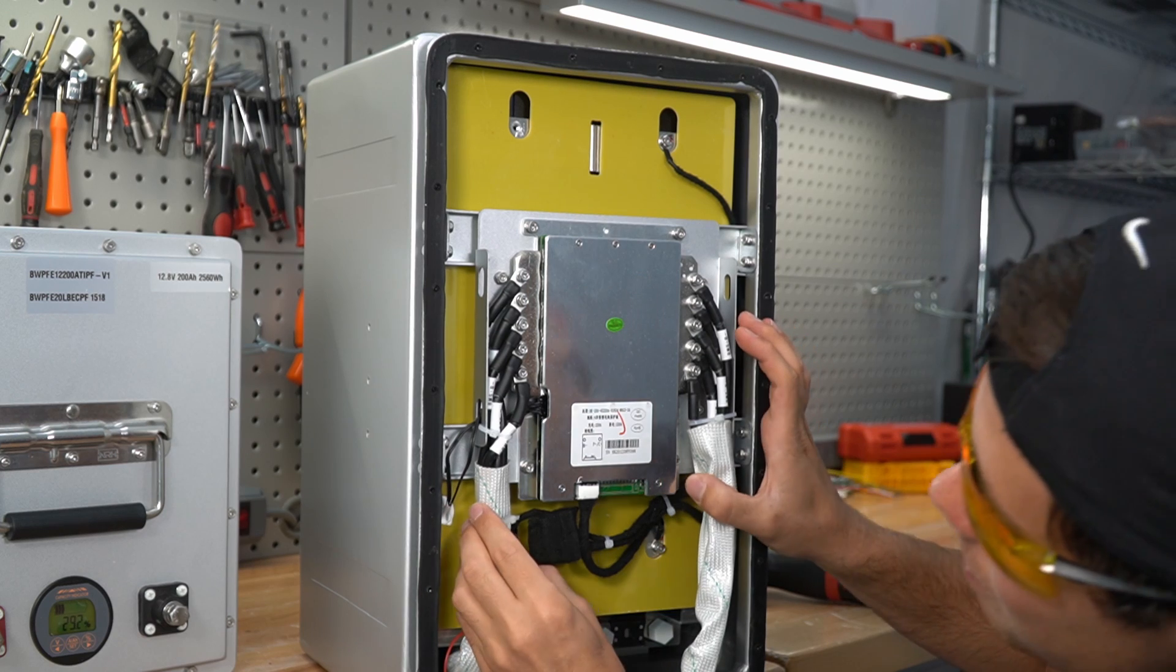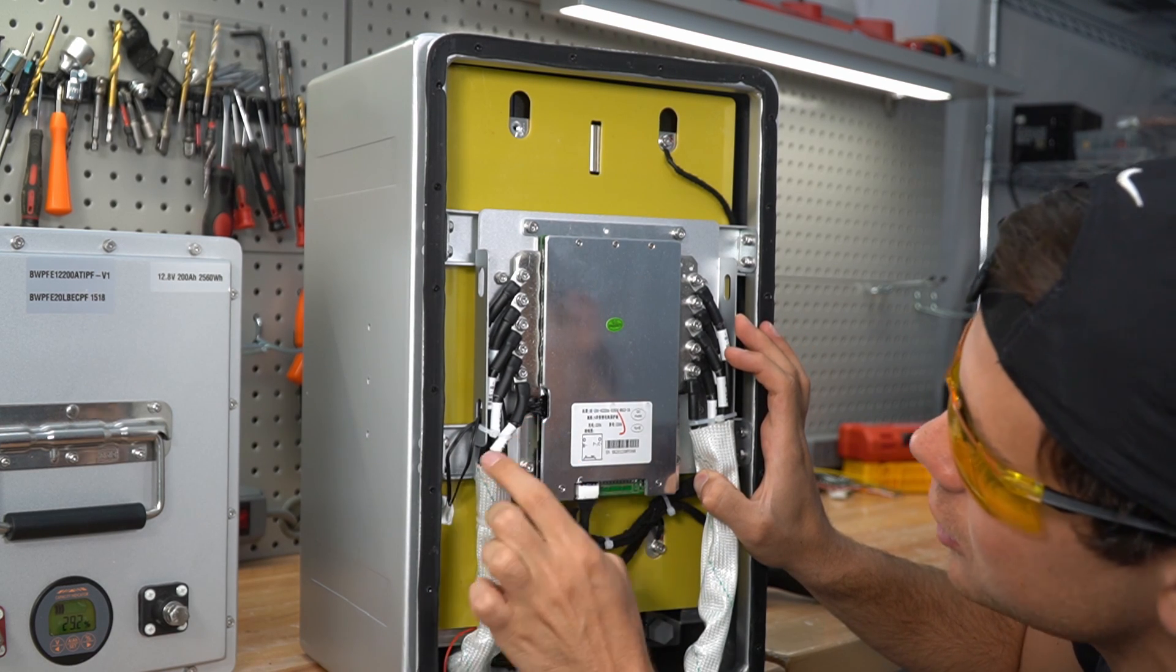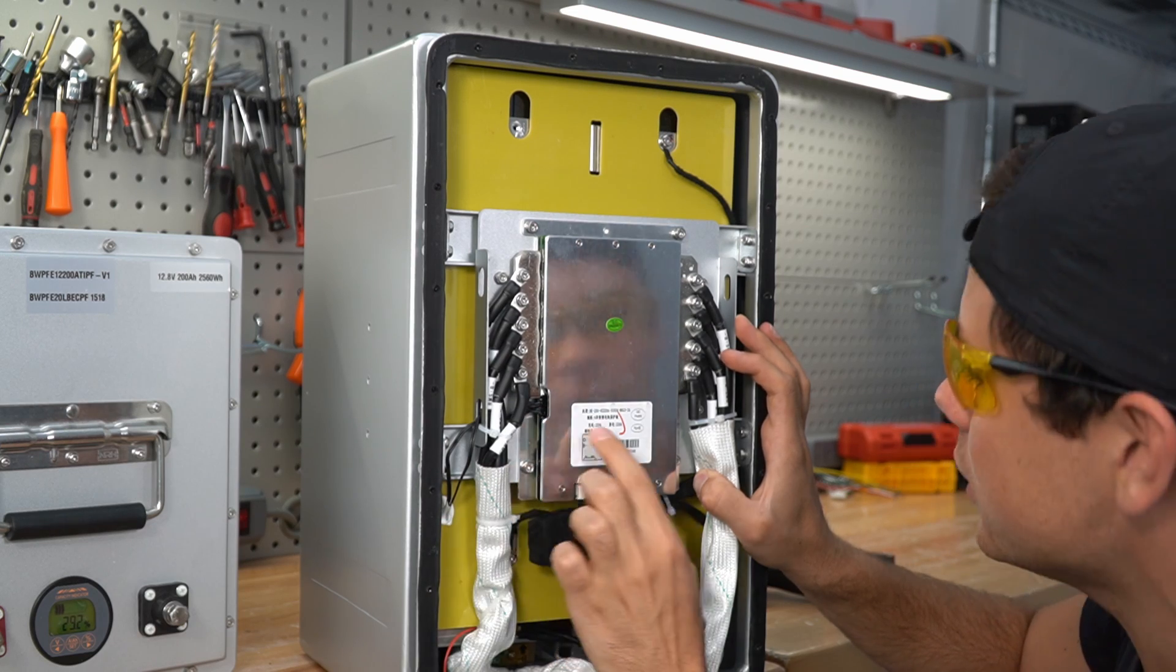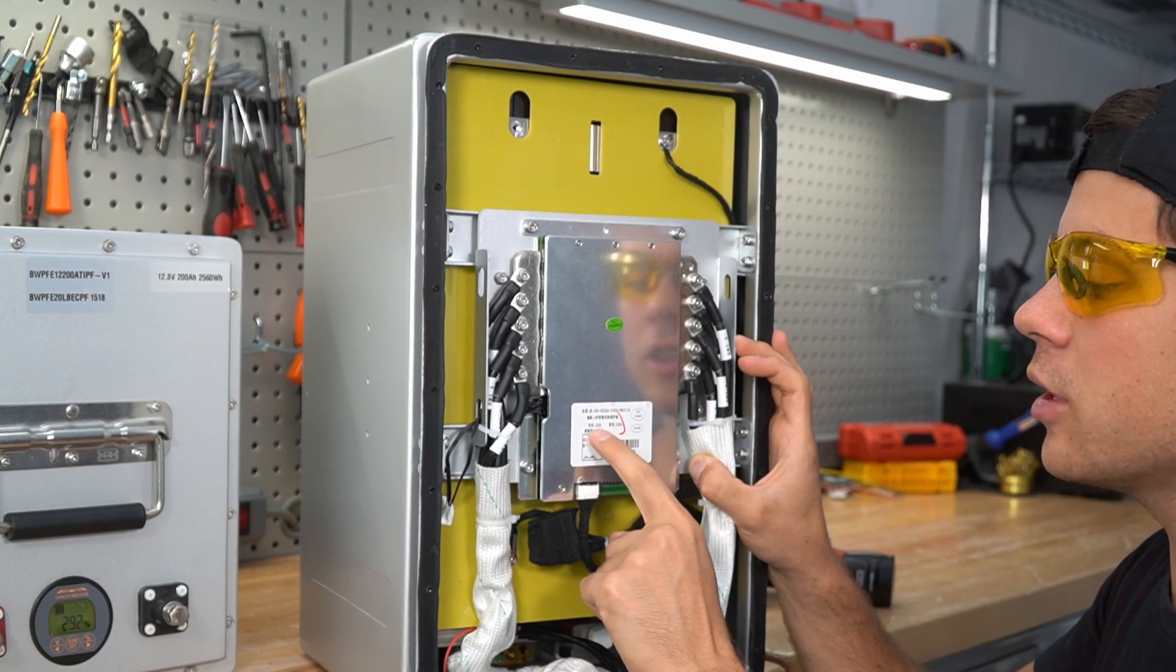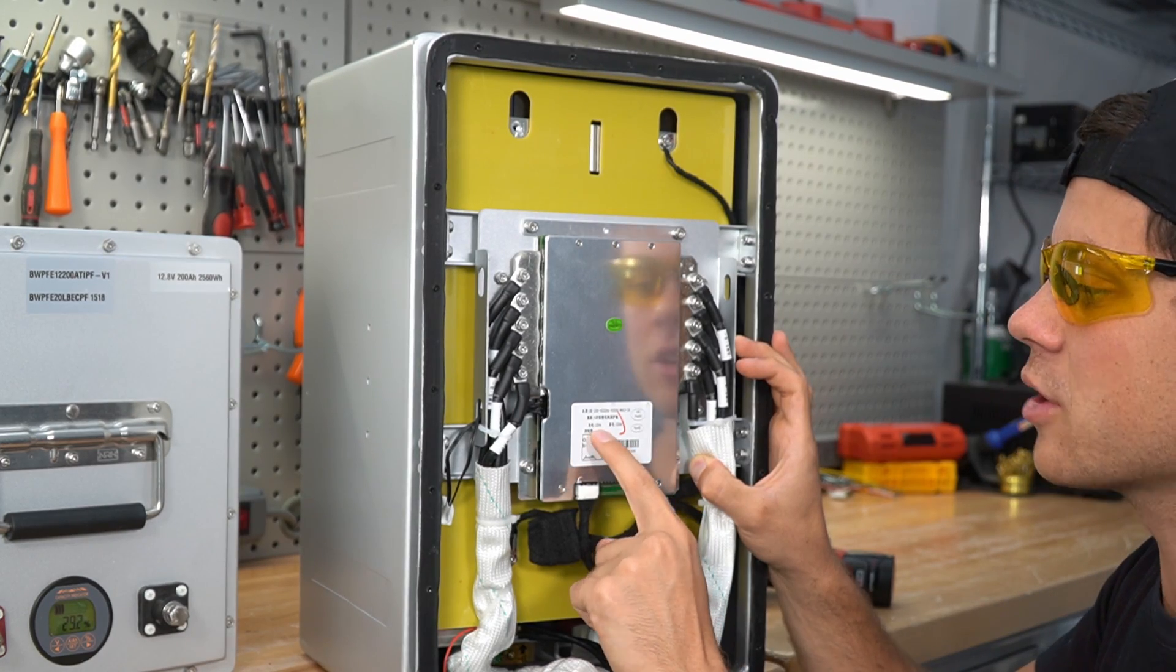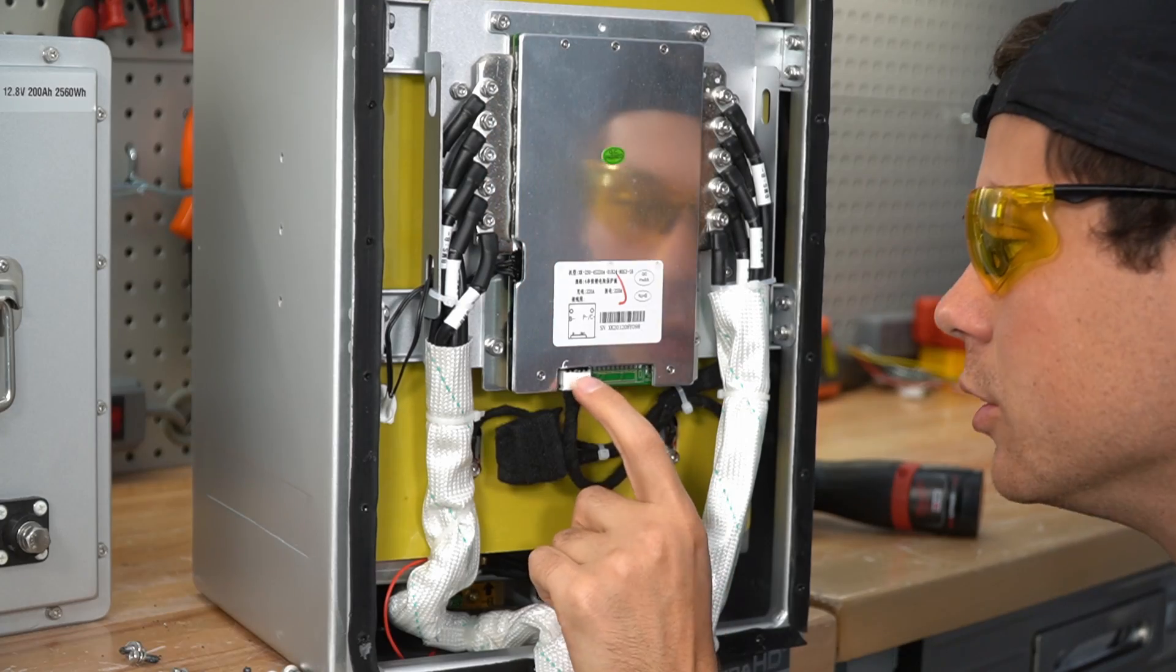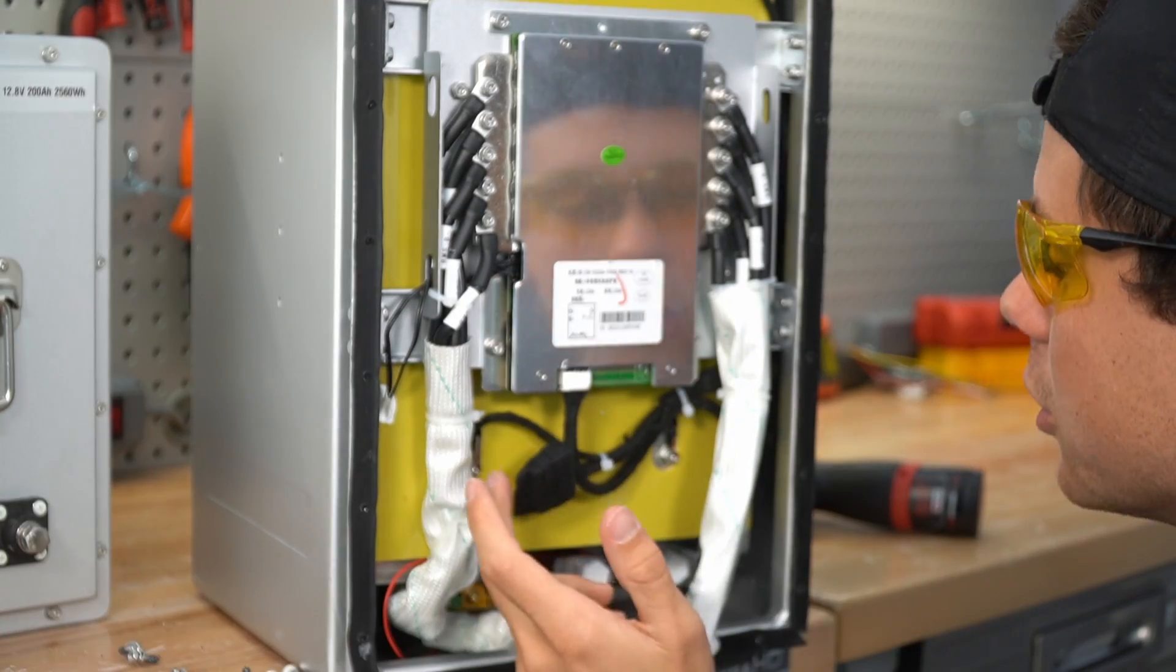We have two temperature sensor leads going out to the cells right here and everything is glued and sealed. And it says 220 amps on the BMS, so they probably derated it to 150 amps, which is very good. And even the balance cable is glued in place. I cannot remove it. This is an A-plus build quality right here.